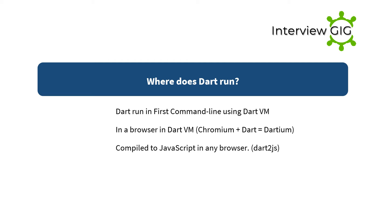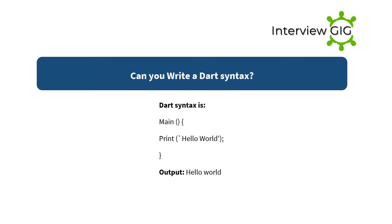What is Dart syntax? A basic Dart syntax example is: main() { print('Hello World'); } — the output is: Hello World.